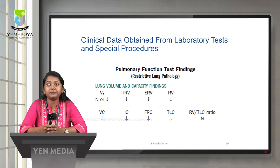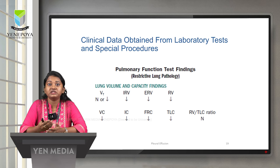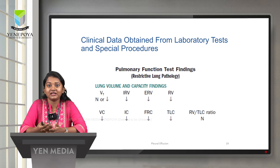Clinical data from laboratory tests in pleural effusion: on pulmonary function testing for a patient with pleural effusion, we see a restrictive lung pattern. Tidal volume will be normal or reduced, inspiratory reserve volume is reduced, expiratory reserve volume is reduced, and residual volume is also reduced. To assess residual volume, total lung capacity, and functional residual capacity, we can use body plethysmography or a gas dilution test.